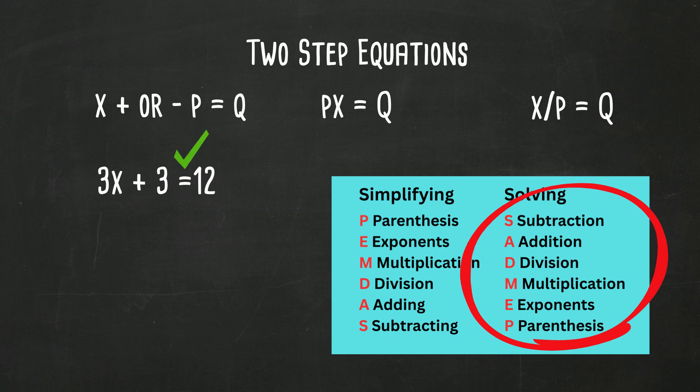Notice we have an equal sign. So it's subtraction, addition, division, multiplication, then exponents, then parentheses. So let's begin with addition. We're going to subtract 3 from both sides. The 3's cancel, and 12 minus 3 is 9. Now we have 3x equals 9. In order to undo the multiplication, we're going to divide both sides by 3. The 3's cancel, and that leaves us with x equals 3.